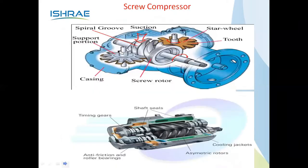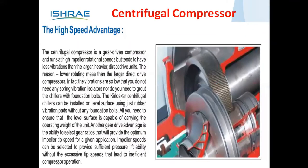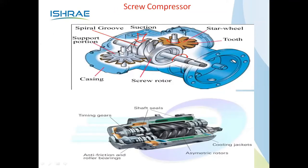The screw compressor — there is also a single screw compressor technology where the screw rotates between two star wheels, creating the compression effect. The single screw compressor is more effective than the double screw compressor. Single screw compressors are now more commonly used compared to twin screw compressors, which consume more power and are less efficient.